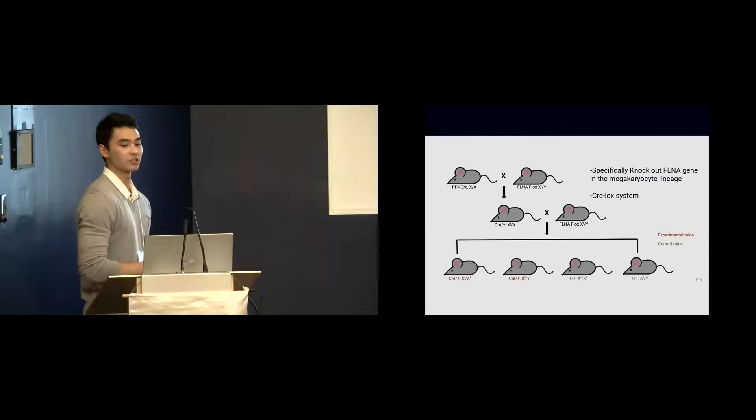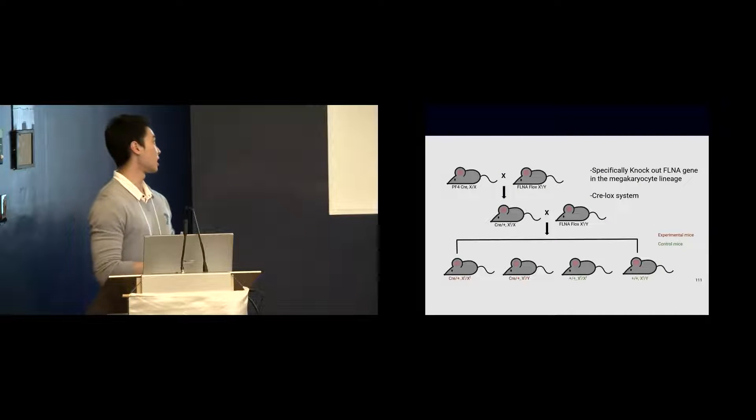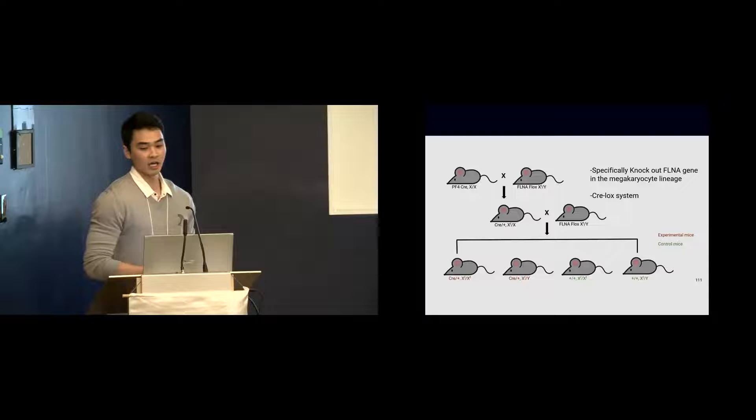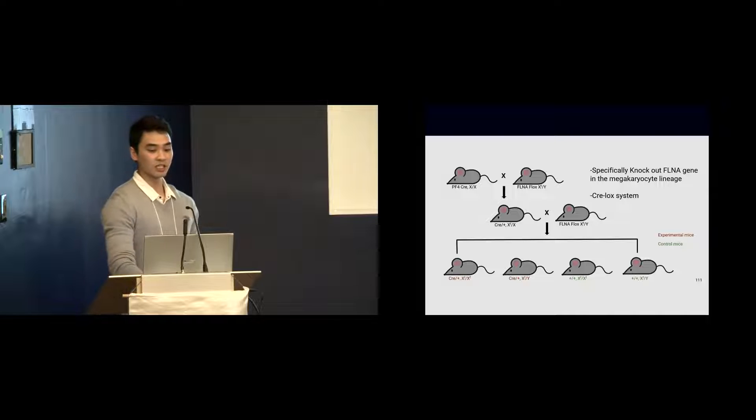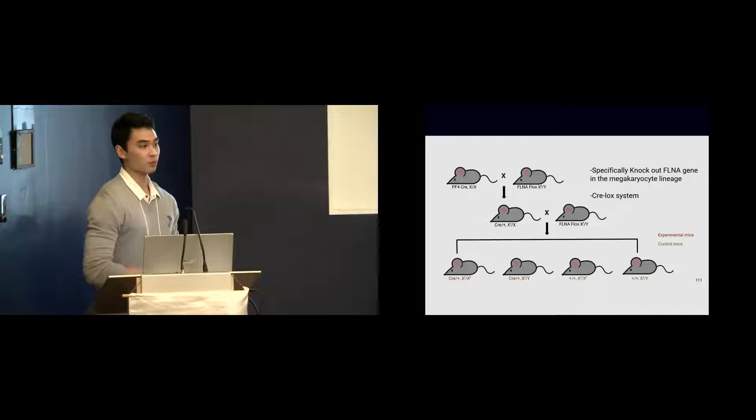So to answer this question, our lab has generated a tissue-specific conditional knockout mouse that specifically knocks out filament A in the megakaryocyte lineage by using the Cre-Lox system. These experimental mice will produce platelets that do not contain the filament A proteins.